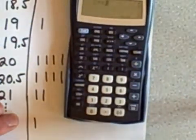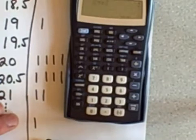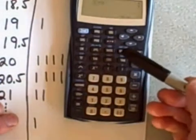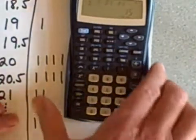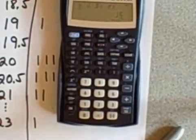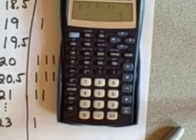All the data is entered. I'm now being prompted, which you can't read, but I'm prompted for the seventh value. There is no seventh value, so the next thing we press is this stat var key right here. This makes our calculations. The first thing it shows us is the size of our sample, in this case it's 15.